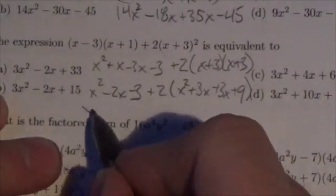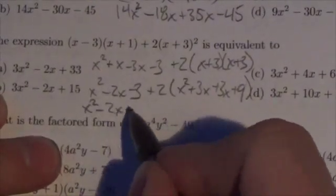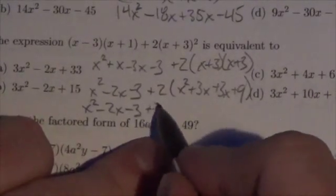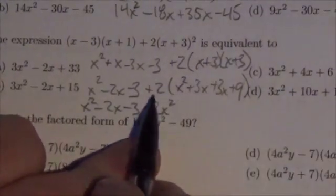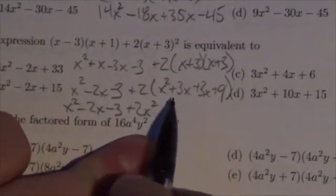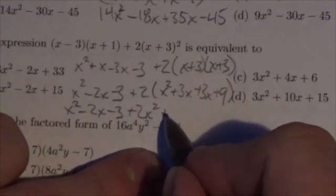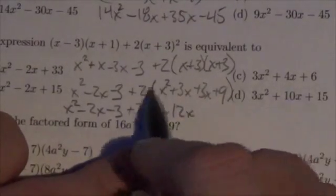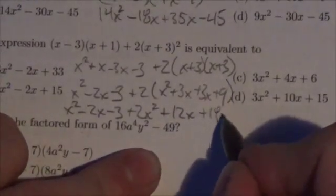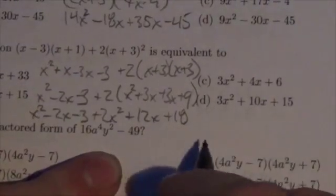So now this is going to be x² minus 2x minus 3 plus 2x² when I distribute this 2 through. Now 3x and 3x is going to be 6x. Take that 2 distributed through, it'll be 12x, and then 2 times 9 is 18.